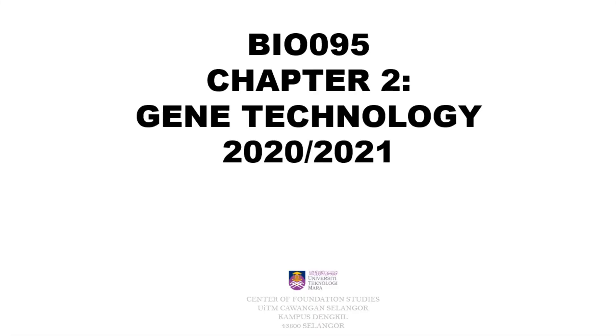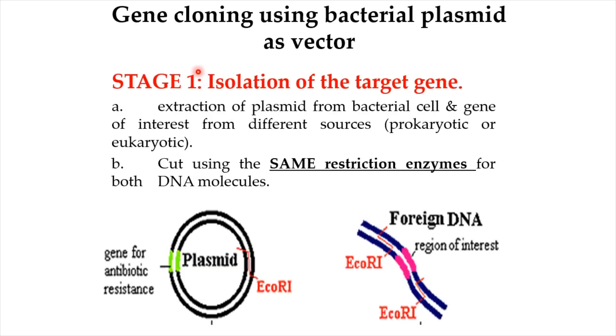Hello everyone, this is Chapter 2: Gene Technology. Here are the steps of gene cloning using a bacterial plasmid as a vector.